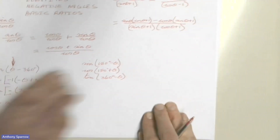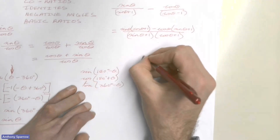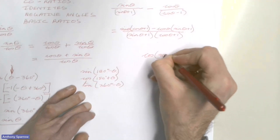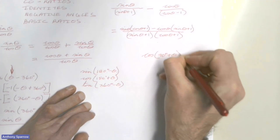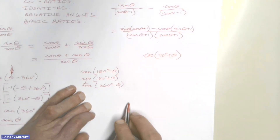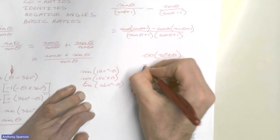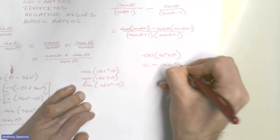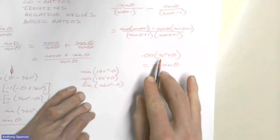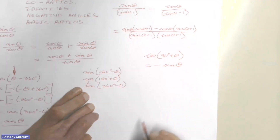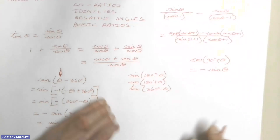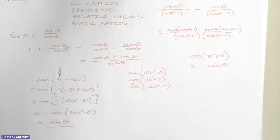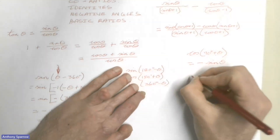A few other pointers: remember that when it comes to co-functions, cos(90° + θ) is the odd one out. All your other ones are a straight change, but this one equals negative sin θ. All the others are positive — that one is the odd one out equal to negative sin θ.